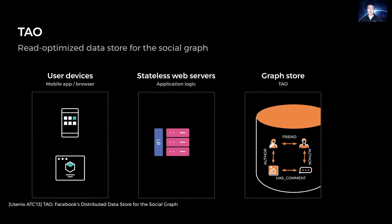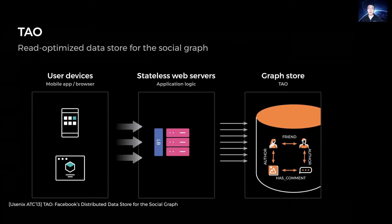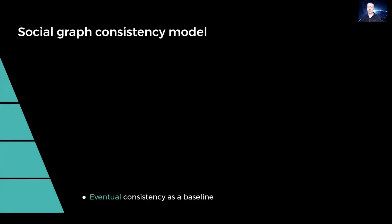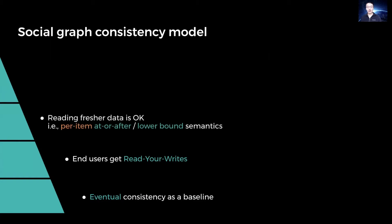As described in a paper in USENIX ATC 2013, Tao is Facebook's geo-distributed data store that provides access to the social graph for all of our applications. Tao's data models are designed for graph nodes and edges, and its API is very simple, serving mostly point queries and range and counts for edges. To render a Facebook feature on a phone or a browser, a user device may issue many web requests handled by stateless web servers, each of which may issue hundreds to thousands of reads to Tao. Our baseline consistency is eventual, but our developers want at least read-your-writes to make it easier to build interactive applications. Since applications don't assume exclusive ownership of data but do expect concurrent modifications, reading fresher data is always okay.